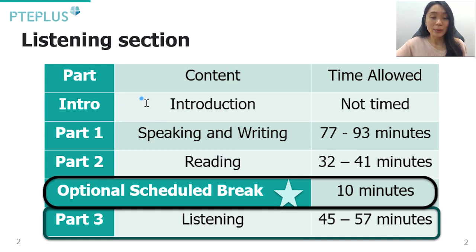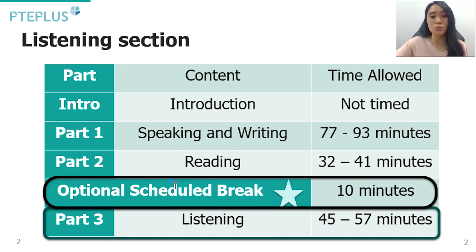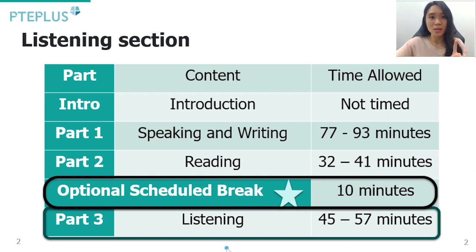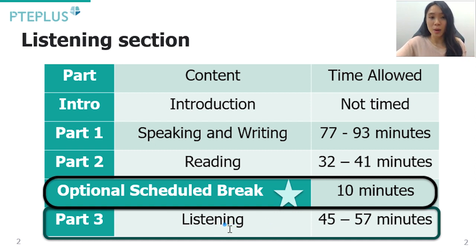HCS, or Highlight Correct Summary, is in the listening part of your exam, which is the last part and goes for about 45 to 57 minutes. Before your listening section — basically after your reading section — you'll get an option to take a 10-minute break. Keep in mind that in the listening section, all audios are only played once, so you want to make sure you're in the best form to maximize your attention.